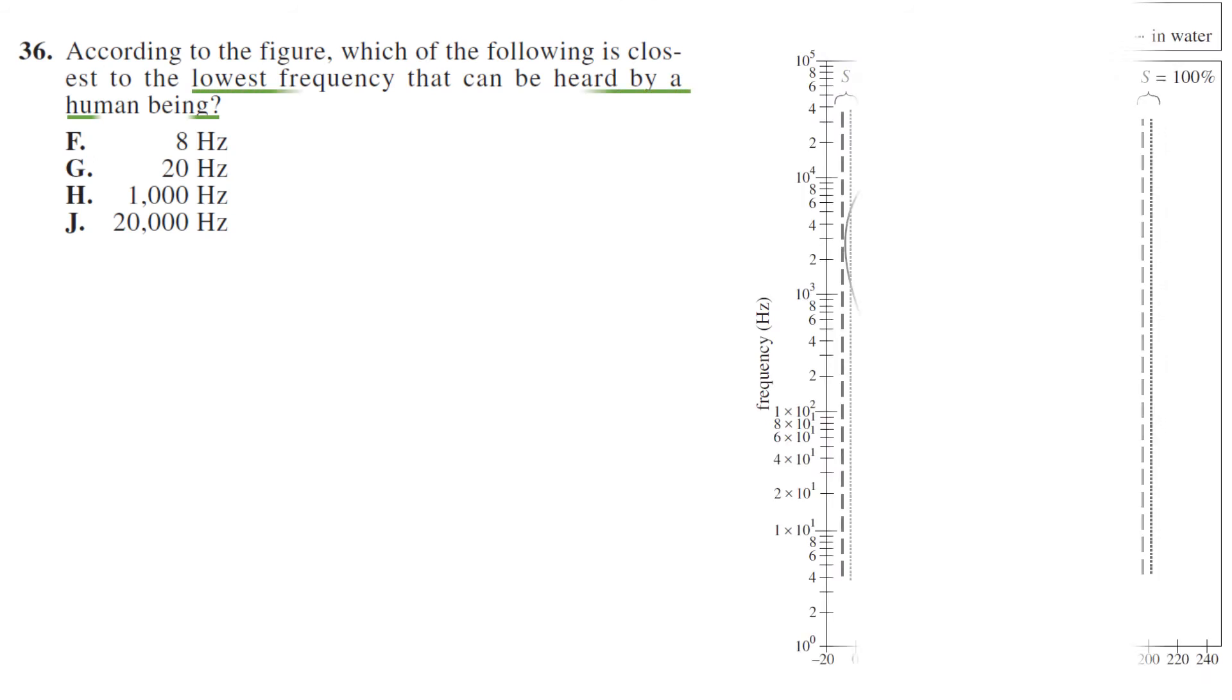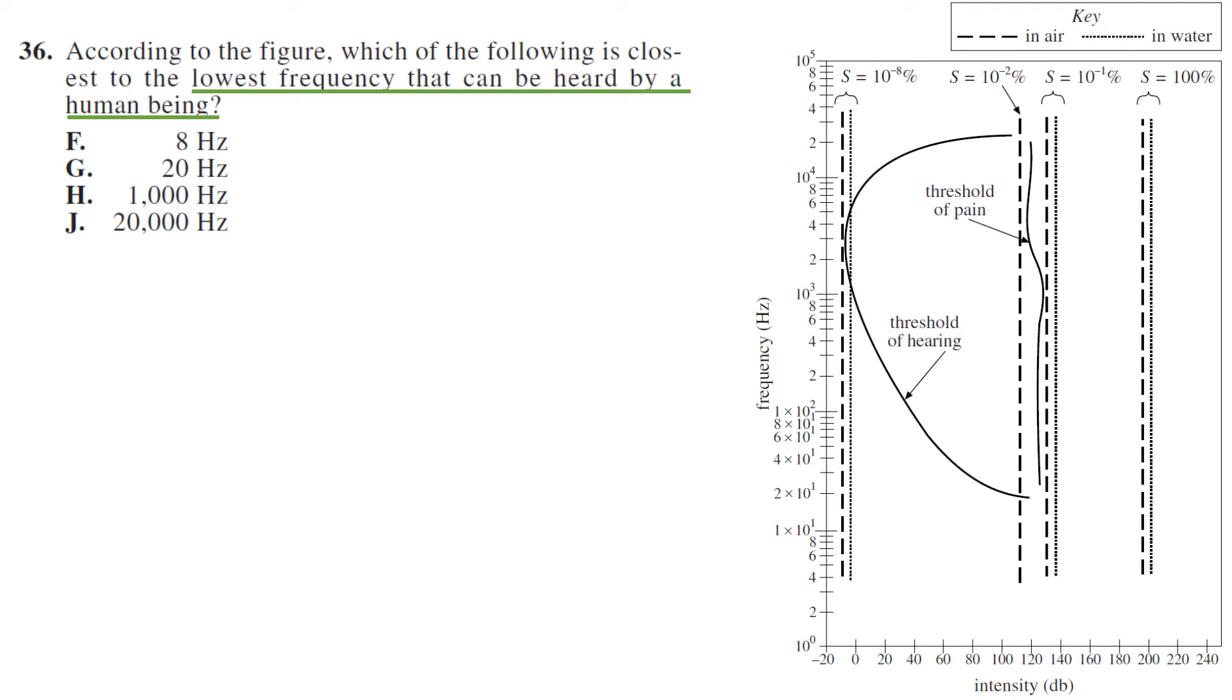According to the figure, which of the following is closest to the lowest frequency that can be heard by a human? We have this threshold of hearing line that's labeled, so the bottom of that line will be the lowest that can be heard. Two times ten to the one - you do have to know scientific notation - so two times ten to the one would be twenty. Your answer is G.